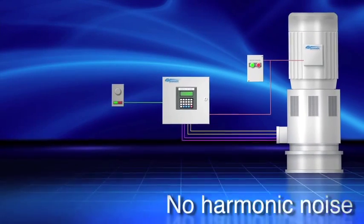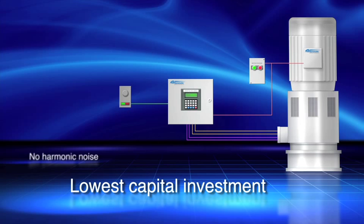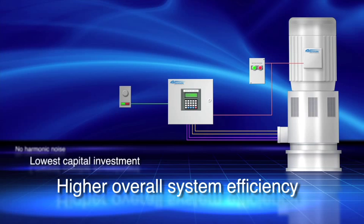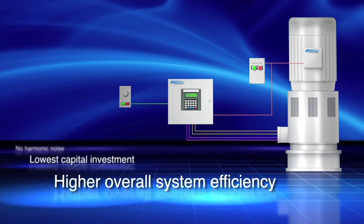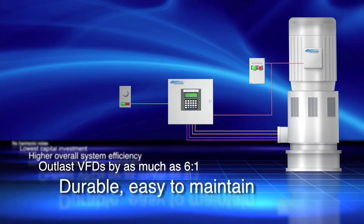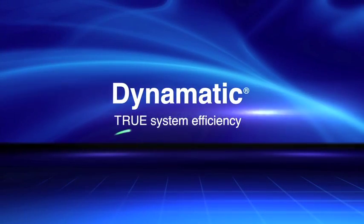Dynamatic systems produce virtually no harmonic noise, can save up to 65% of your capital costs, and provide higher overall drive system operating efficiency. Dynamatic systems can outlast VFDs by as much as 6 to 1, and are easy to maintain. Dynamatic adjustable speed drive systems. True system efficiency.